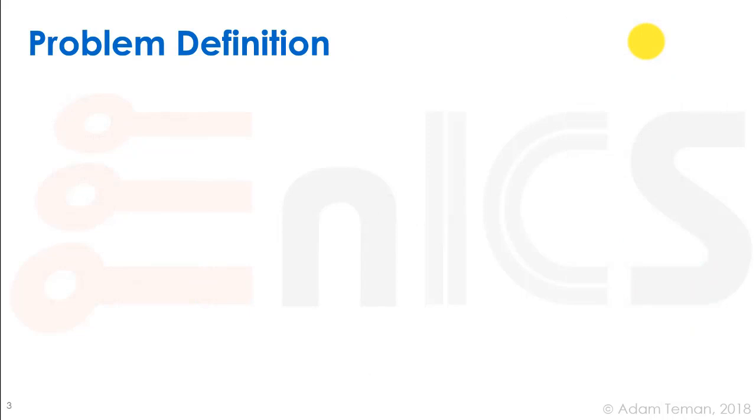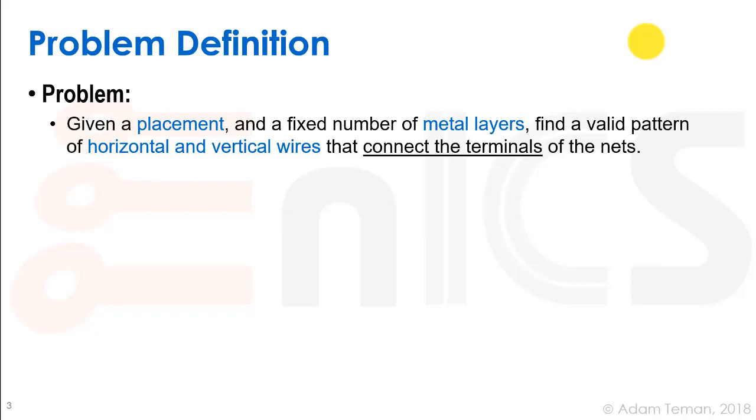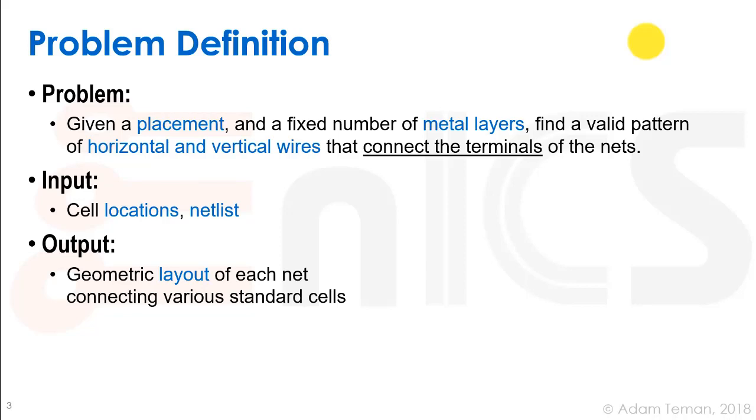So let's define our problem. Given a placement and a fixed number of metal layers, we want to find a valid pattern of horizontal and vertical wires that connect the terminals of the nets. The input to our problem is the cell locations which came out of placement and some clock tree synthesis, and we have a netlist of all the cells and how they connect to each other. What we have to do is give a geometric layout of each net that connects the various standard cells together, and actually each pin of each standard cell to each other.